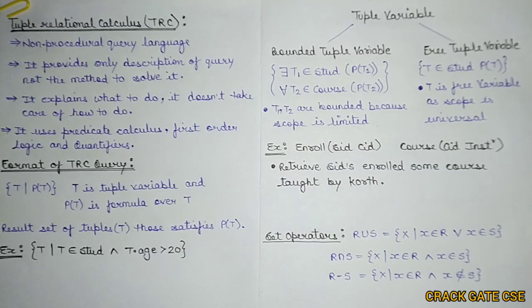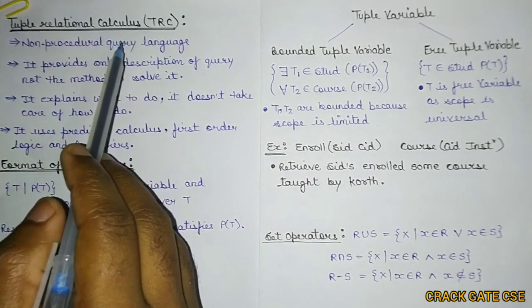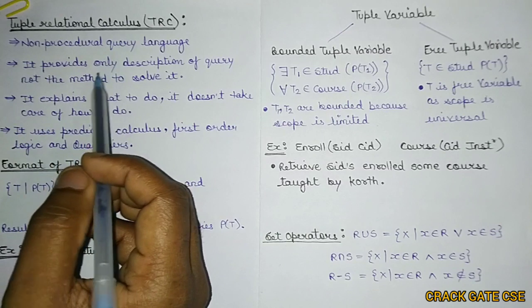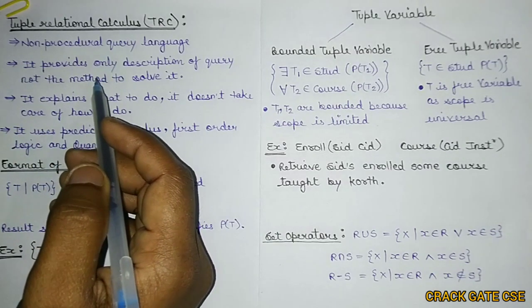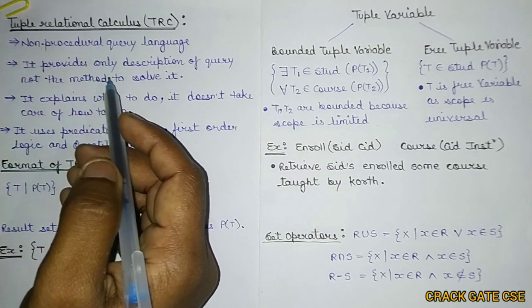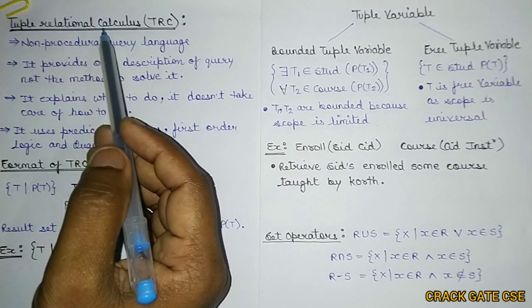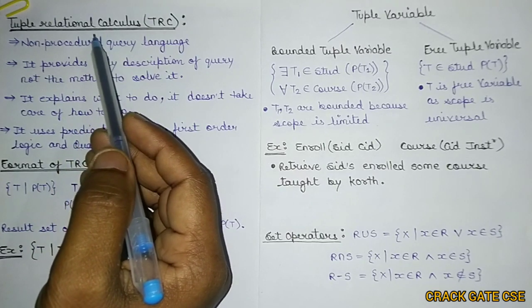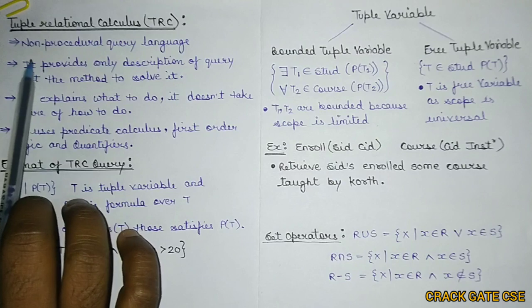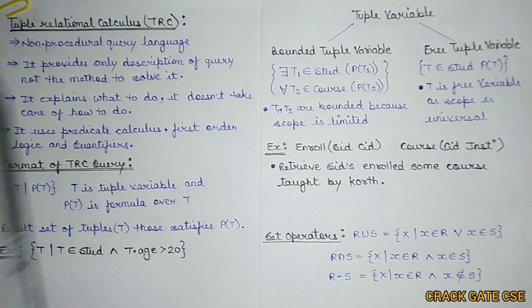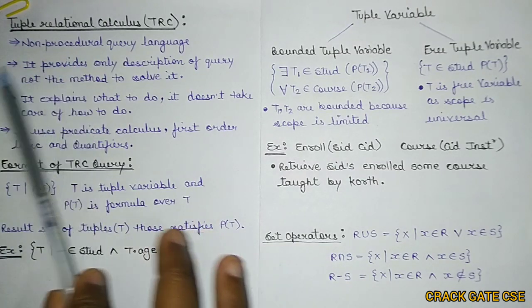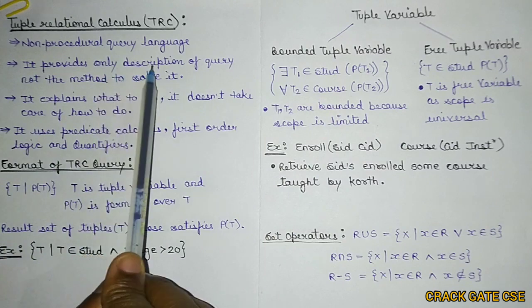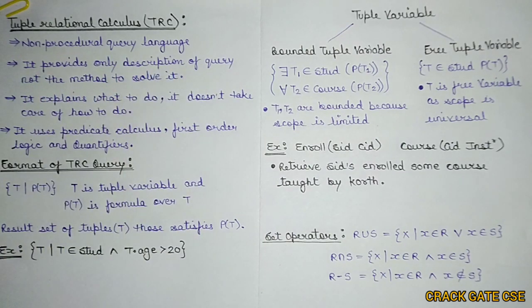So now let's start with this particular topic. What is TRC? TRC is nothing but the Tuple Relational Calculus. This is a non-procedural query language. Unlike relational algebra, which was a procedural query language because everything goes by a defined procedure, in Tuple Relational Calculus there is no such procedure defined. That's why it is known as a non-procedural query language. It deals with what to do, not with how to do. So it provides only a description of the query, not the method to solve it.